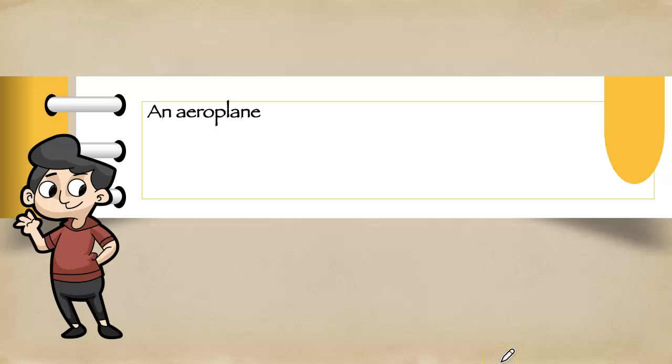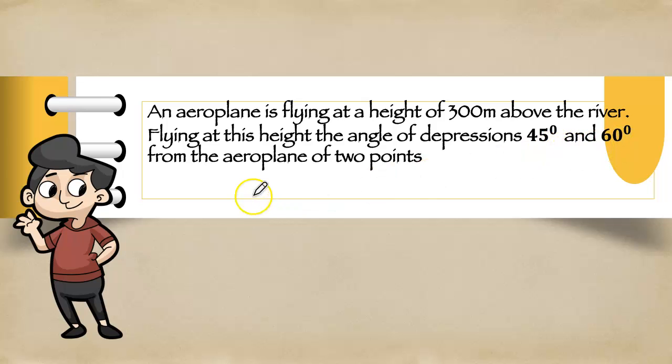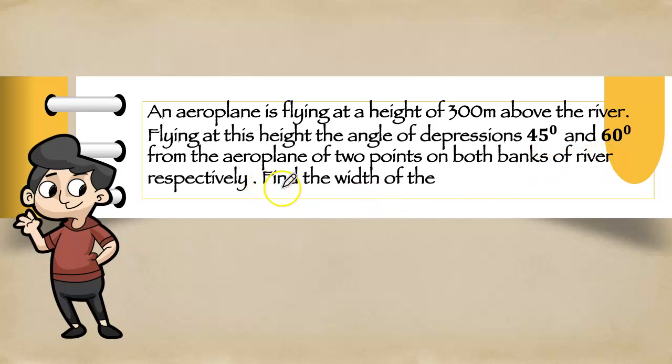Let's see the question. An aeroplane is flying at a height of 300m above the river. Flying at this height the angle of depressions 45 degree and 60 degree from the aeroplane of two points on both banks of river, respectively. Find the width of the river.